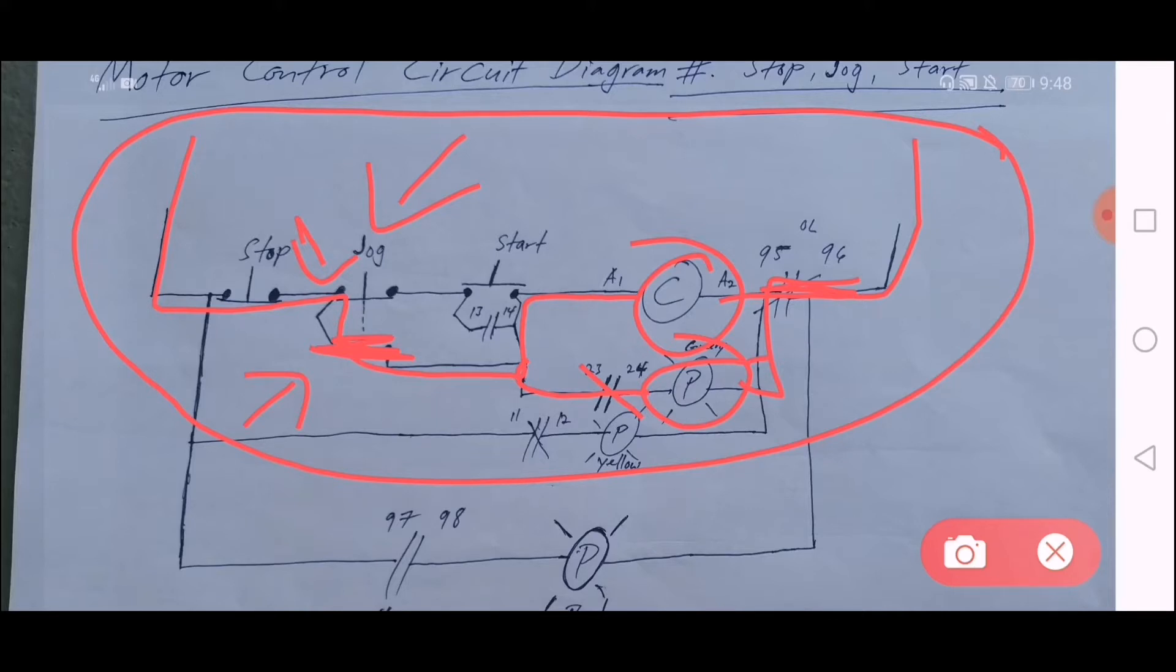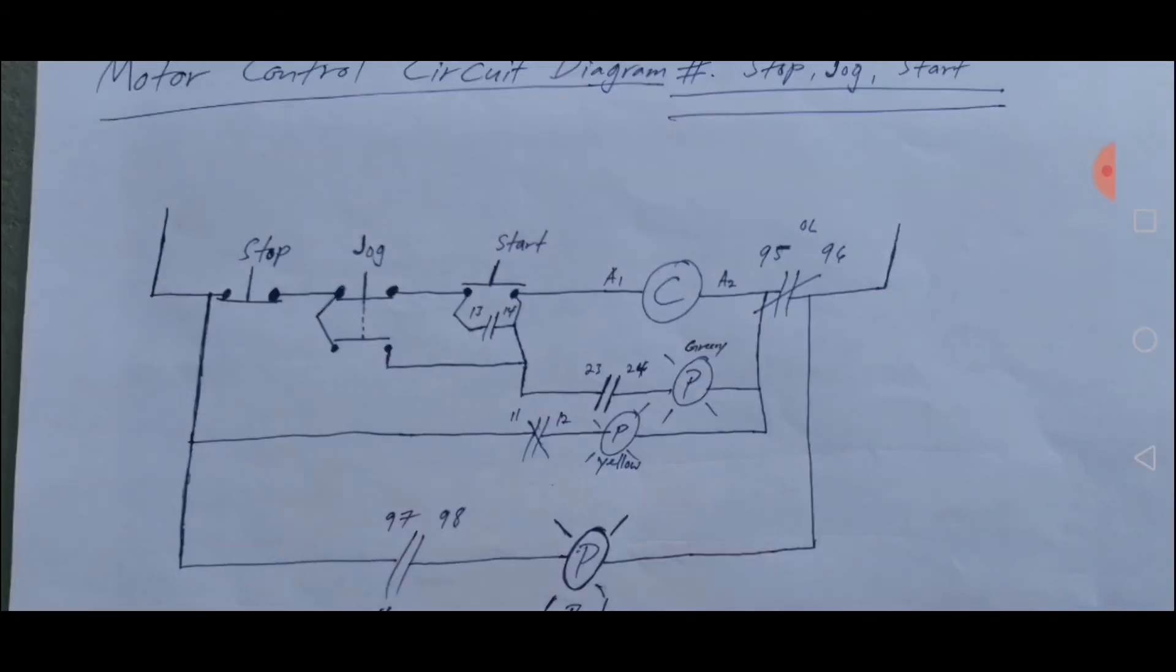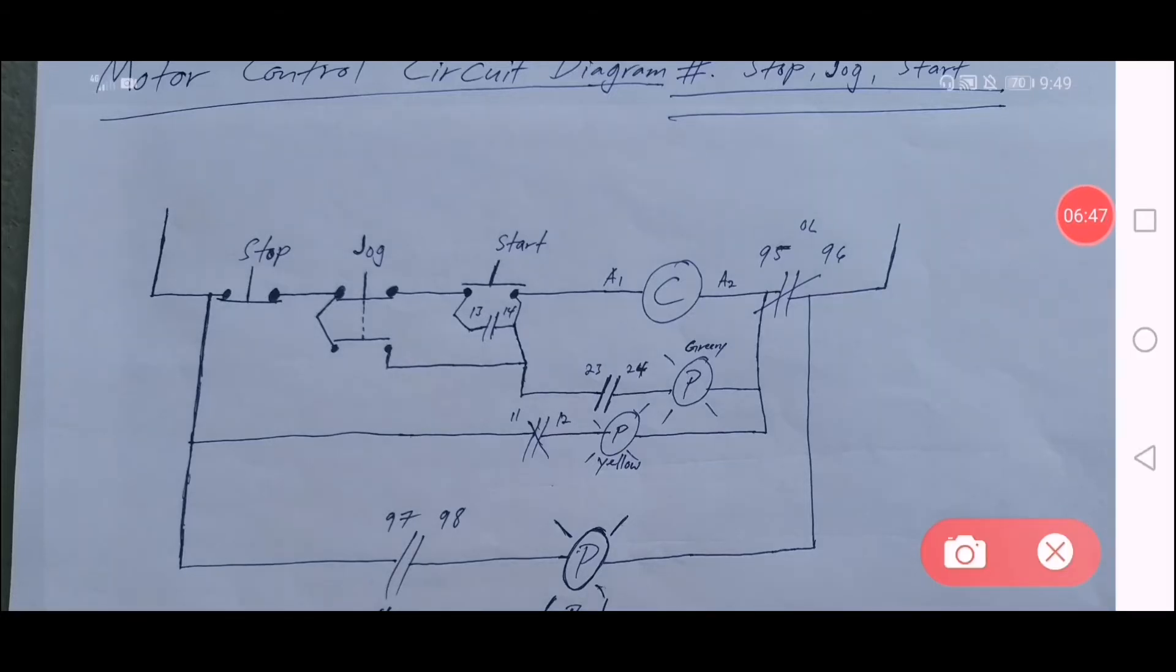Okay guys, if you have a question you can comment below so I can answer. What you see here - the difference between the across the line and this jog position is with no 13-14. See here, number 13-14. When you press the button, this one will close so you have a complete circuit already.